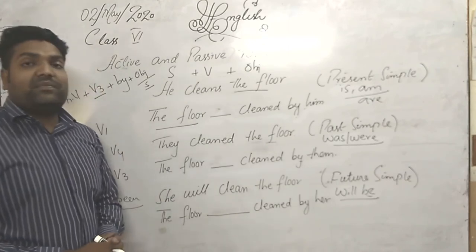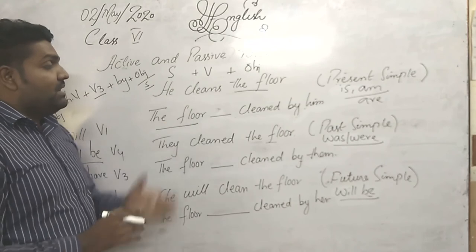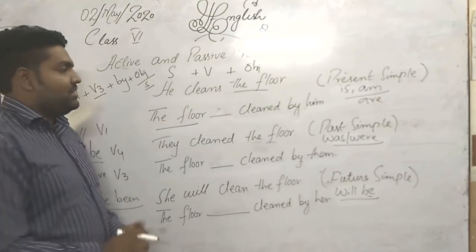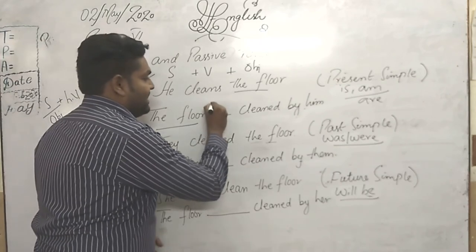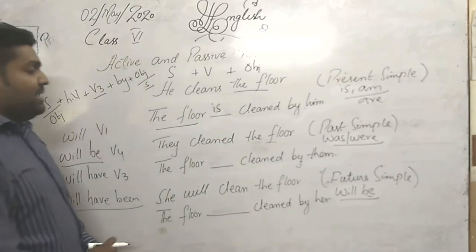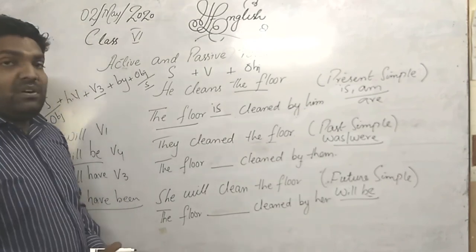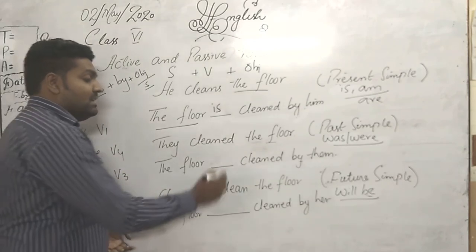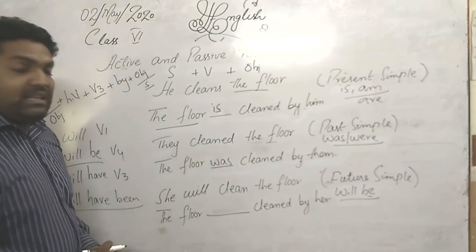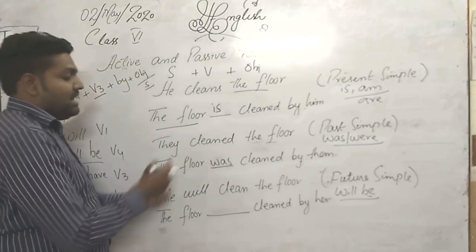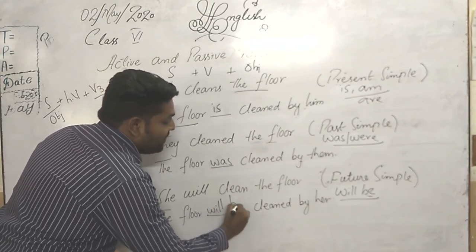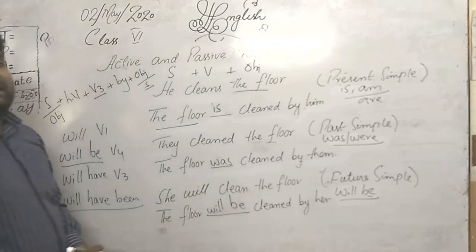Now the answers: First — 'He cleans the floor' becomes 'The floor is cleaned by him.' Second — 'They cleaned the floor' is past simple, so it becomes 'The floor was cleaned by them.' And the last one: 'The floor will be cleaned by them.'